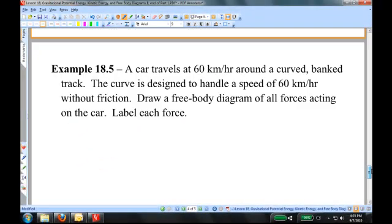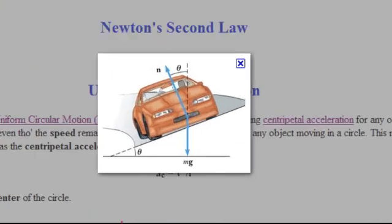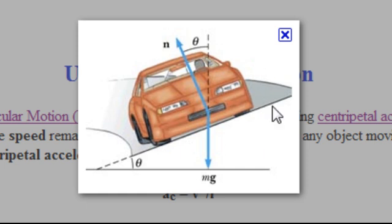Let's go to another example. The next example, 18.5. A car travels at 60 kilometers per hour around a curved banked track. The curve is designed to handle a speed of 60 kilometers per hour without friction. Draw a free body diagram of all forces acting on the car and label each force. The way this problem is stated is a little bit esoteric, and so what I thought to do is to try to put you in touch with kind of a diagram of this.